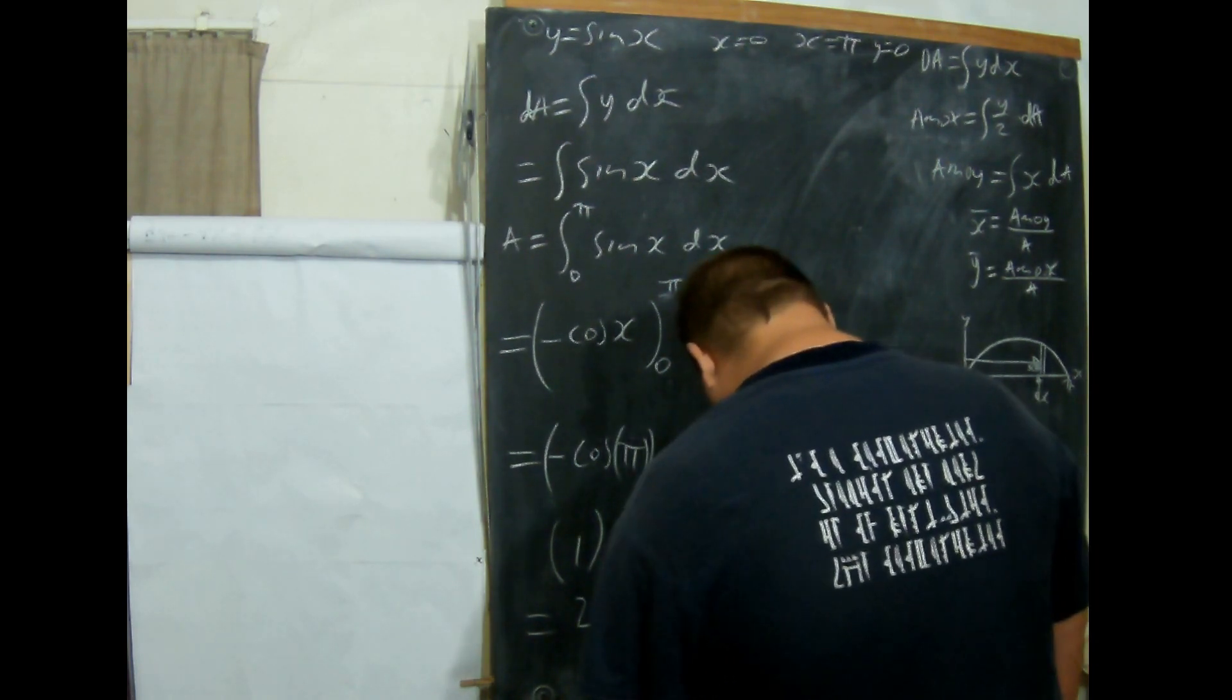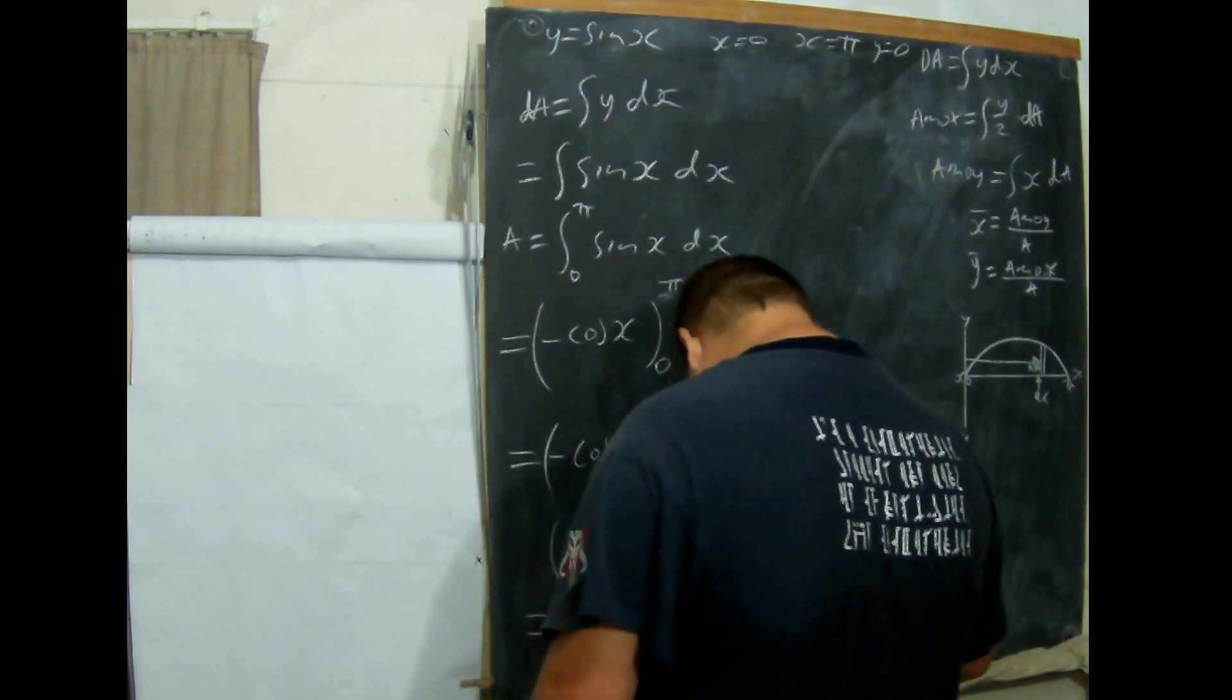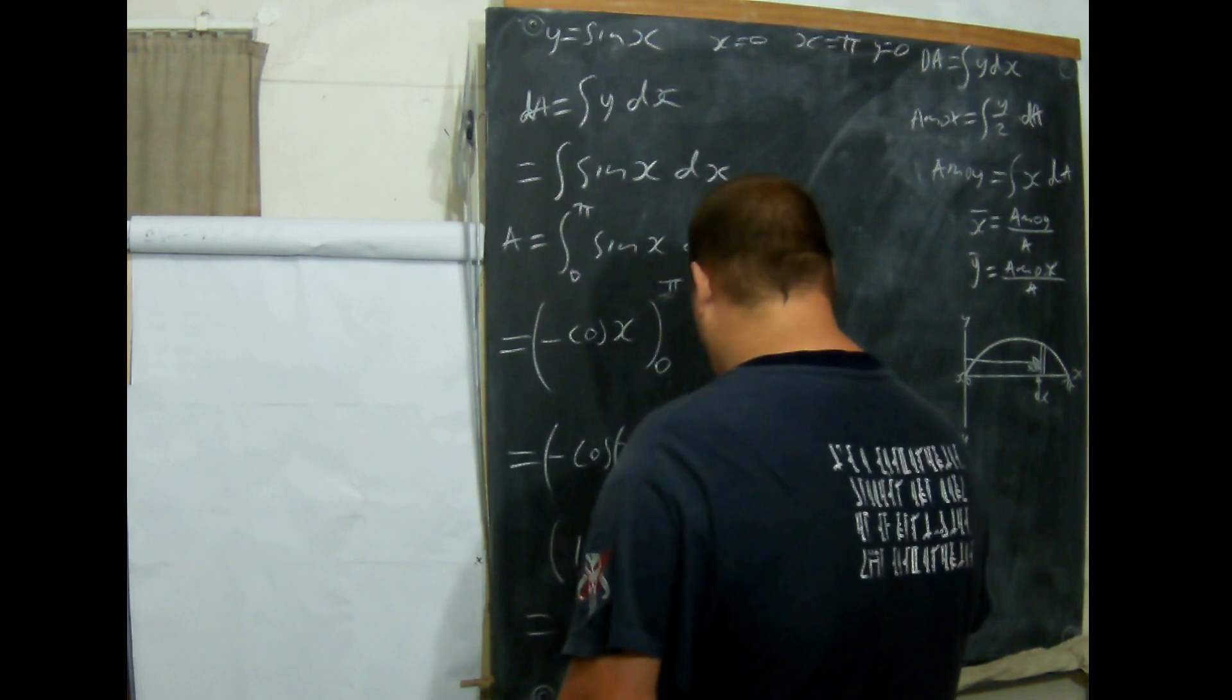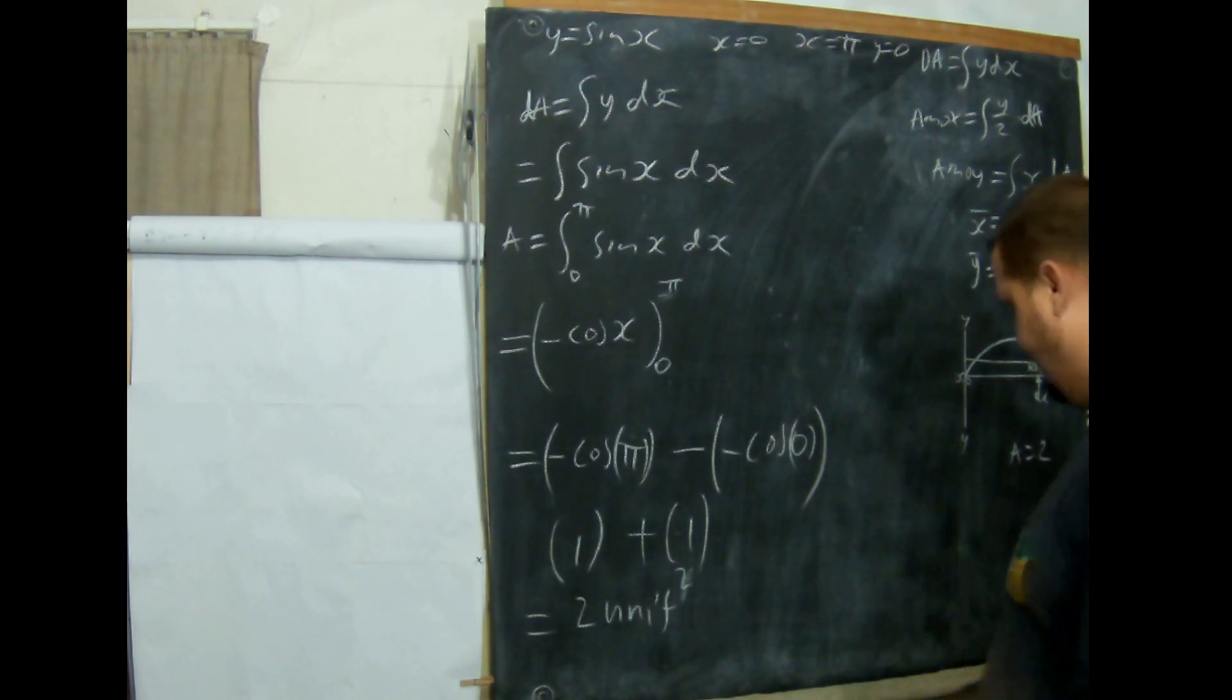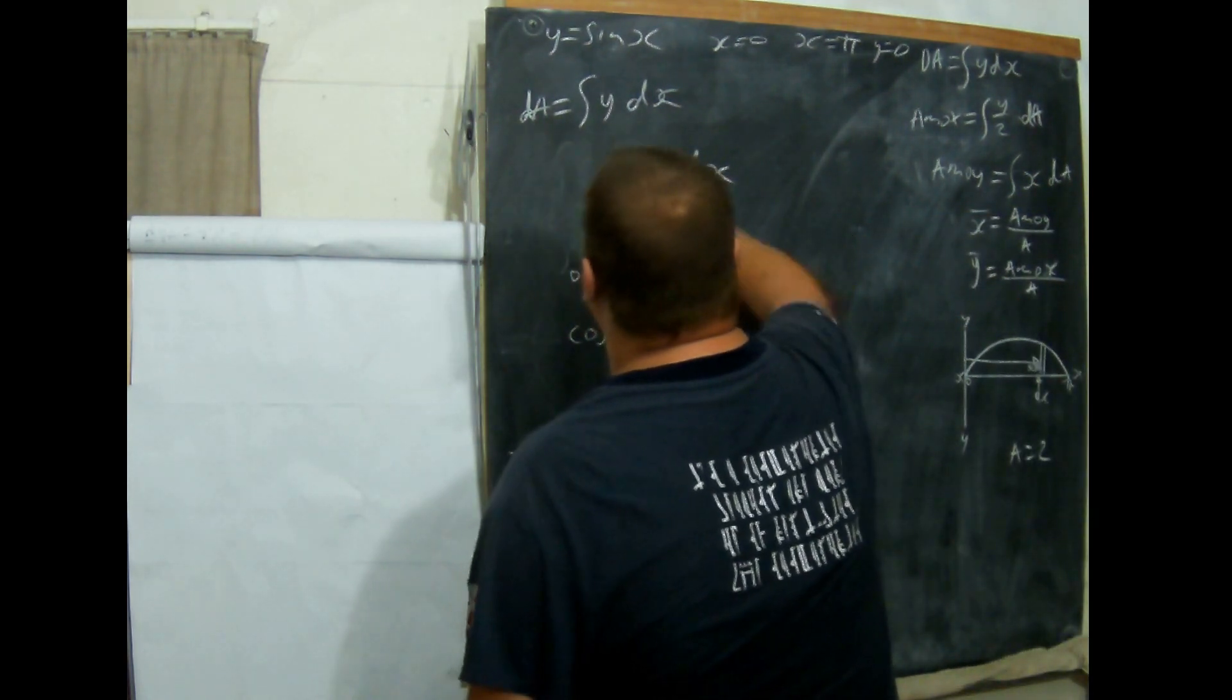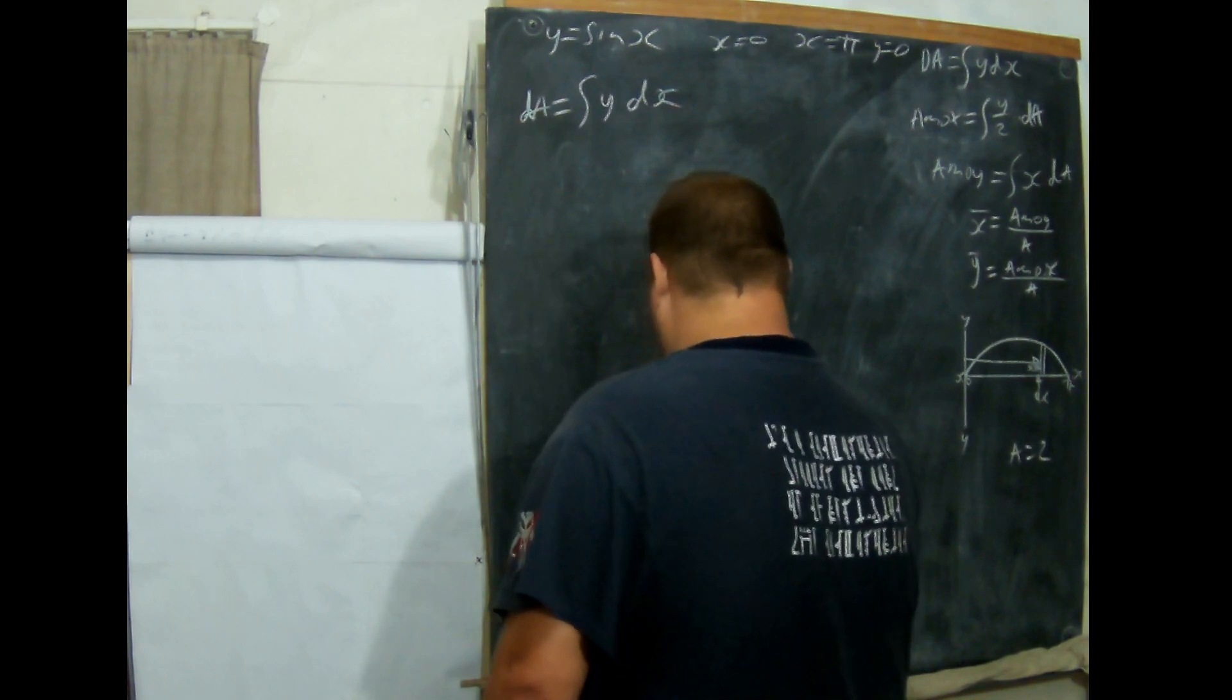Now we've got 2 units, which is A. So A equals 2. That'll be important later. Now what we need to focus on is another part of the sum.